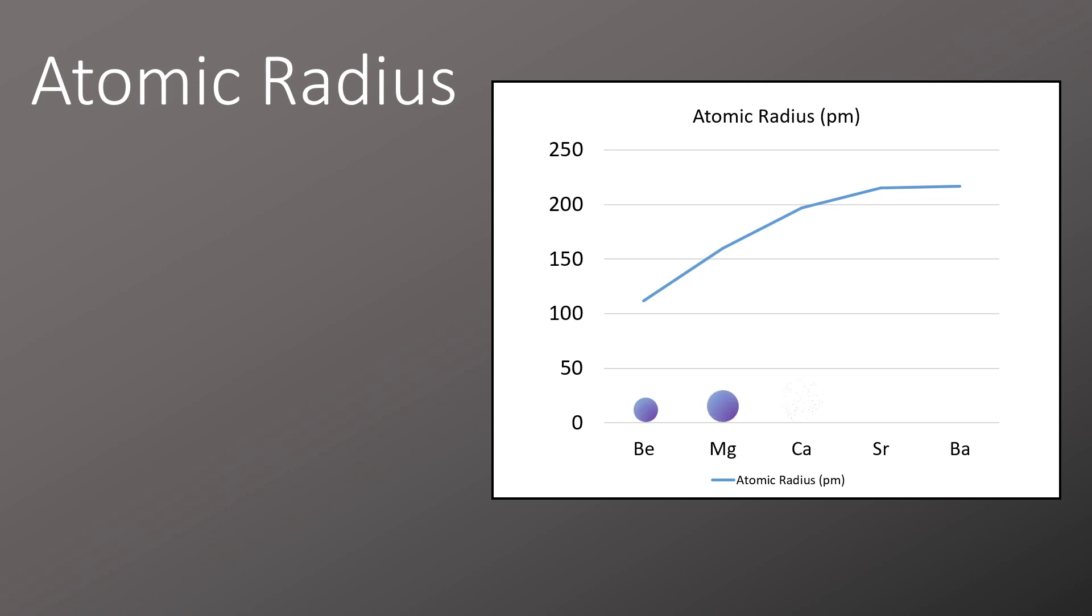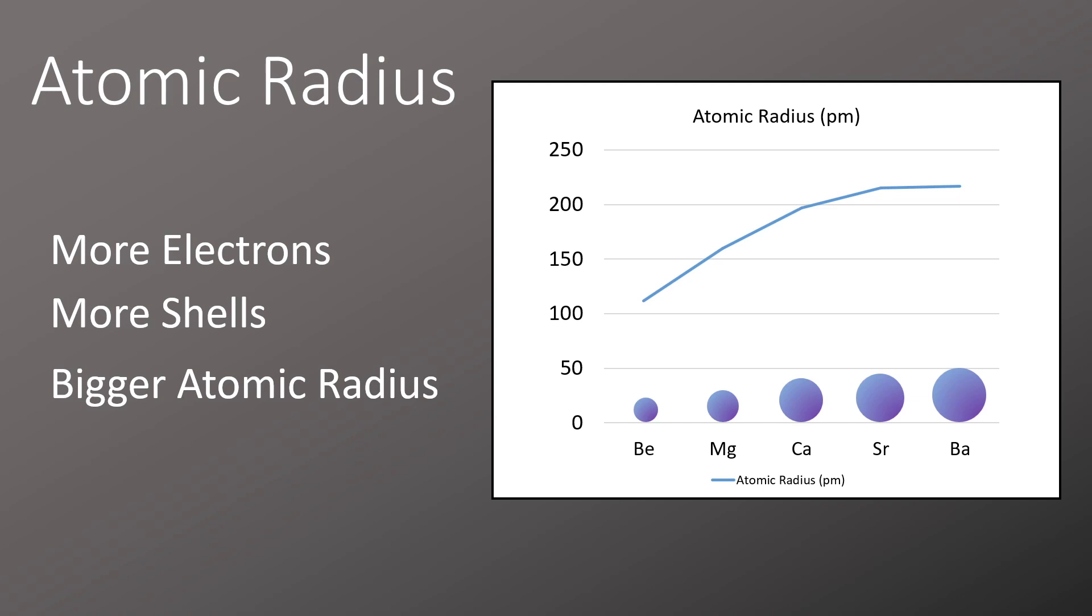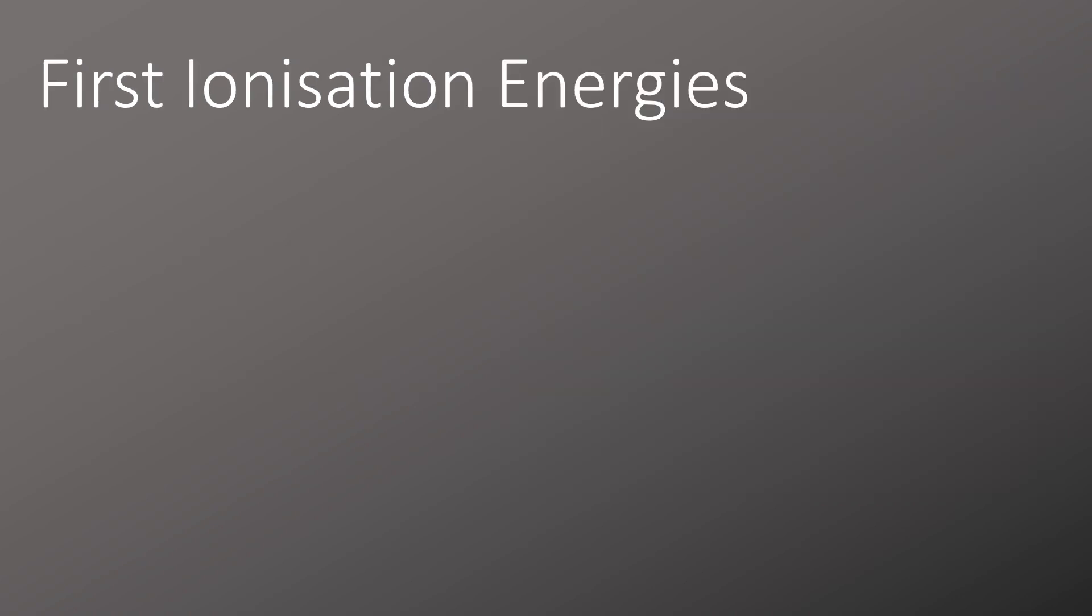When we look at atomic radius, the atomic radius increases down the group, and we can see that with the little graphics appearing along the bottom of the graph. This happens because we have more electrons, more electrons lead to more shells, and more shells give us a bigger atomic radius.